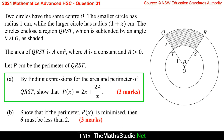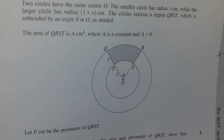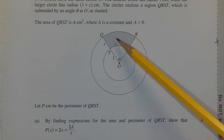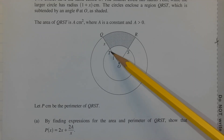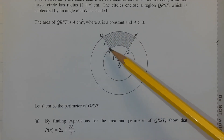Part A: by finding expressions for the area and perimeter of QRST, show that p of x equals 2x plus 2a over x. Consider area QRST. Here's the diagram showing the shaded region which is the area QRST. It's the difference between the large minor sector QOR and the small minor sector TOS, so it's sector QOR minus sector TOS.